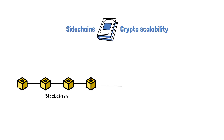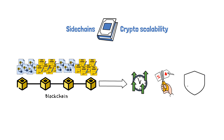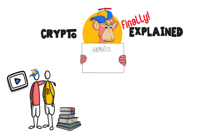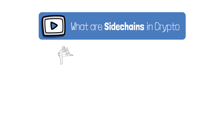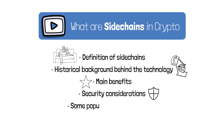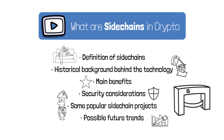This is where the concepts of sidechains and crypto scalability come into play. It's all about expanding our blockchain road to accommodate more traffic, making transactions faster and cheaper without compromising on security. Welcome to Crypto Finally Explained, the most crypto-friendly educational YouTube channel for actually learning crypto. Here, I've finally explained crypto topics using simple animations, visual doodles, and real-life examples, so no matter if you're 5 or 75, you'll be able to understand it. In this video, we will discuss the definition of sidechains in crypto, the historical background behind the technology, its main benefits, the security considerations, some popular sidechain projects, and possible future trends in sidechain development. Ready? Let's get started!